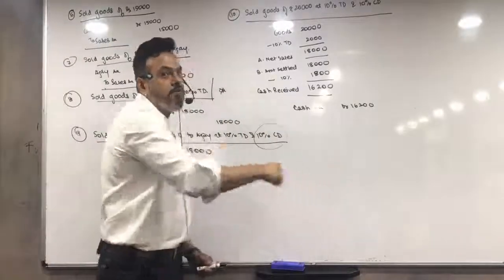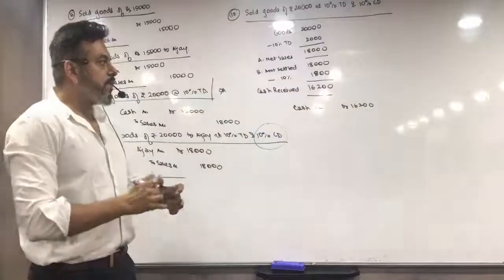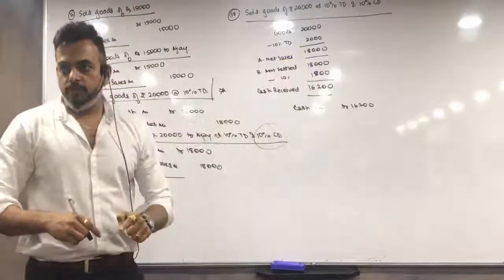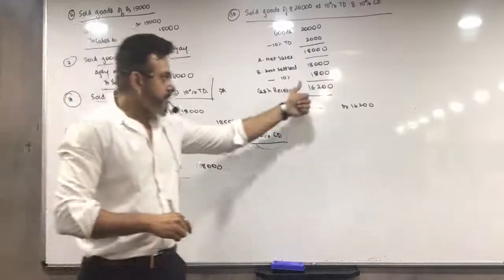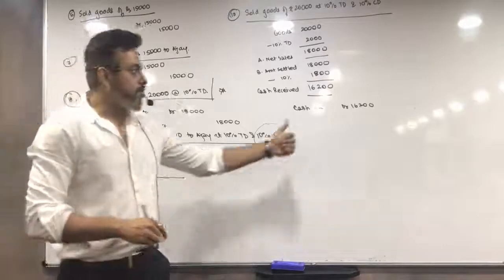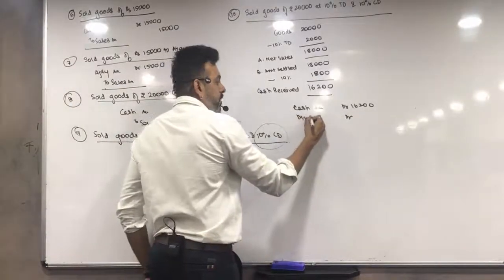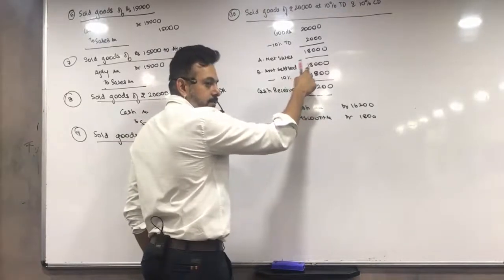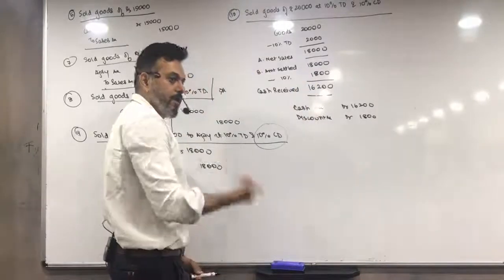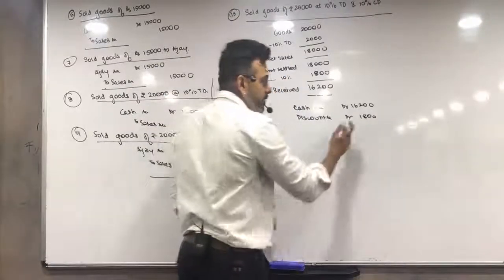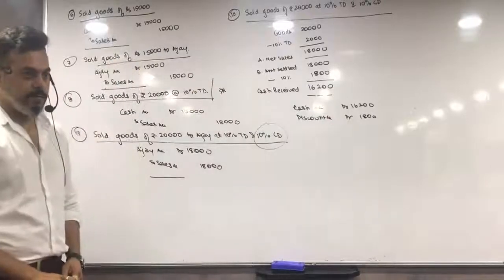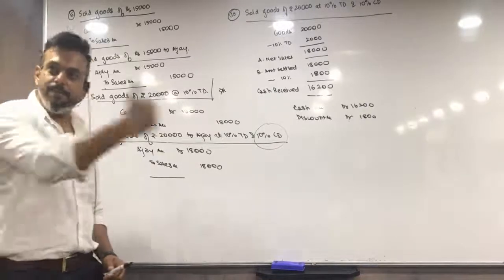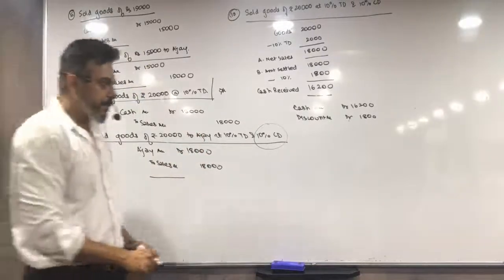Always remember: if cash is debit, discount will always be debit. If cash is credit, discount will always be credit. When cash comes in, you were supposed to receive 18,000 but you received 16,200, so you gave a discount of 1,800 — that is your loss. Losses and expenses are always debited. When we receive cash, we give discount — it's our loss, so debit. When we make payment, we get discount — it's our income, so credit.